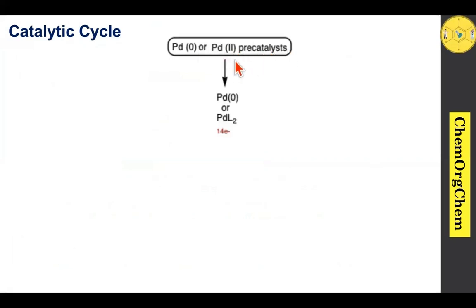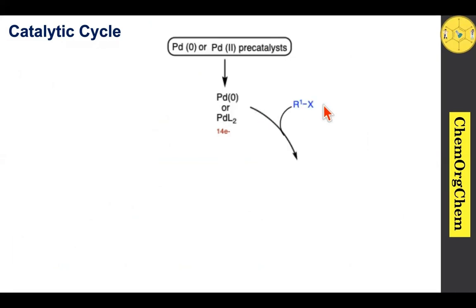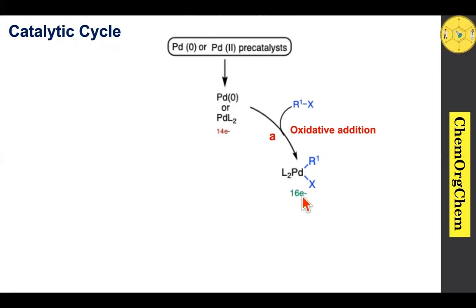Initially, palladium(0) or a palladium(II) precatalyst can be used for this reaction. If you use the palladium(II) precatalyst, you need to add a suitable ligand to generate palladium(0) in situ. This palladium(0) complex is a 14-electron species which readily undergoes oxidative addition with an organotriflate or organohalide to produce the corresponding palladium(II) species, which is a 16-electron species.